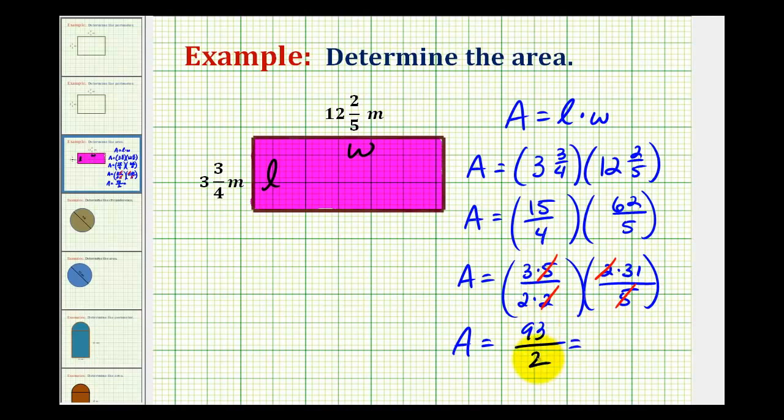Let's go ahead and rewrite this as a mixed number, and then include the units of meters squared. So we'll divide ninety-three by two to determine the mixed number. There are four twos in nine, four times two is eight. Subtract, bring down the three. There are six twos in thirteen, six times two is twelve. We have a remainder of one.